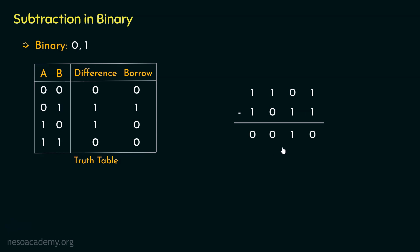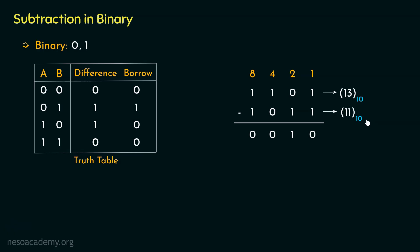The result of the subtraction is 0010. We can verify this using place values. For a 4-bit number, the place values are 1, 2, 4, and 8. The minuend 1101 in decimal is 8+4+1 = 13. The subtrahend 1011 in decimal is 8+2+1 = 11. The difference 0010 equals 2 in decimal, which is correct since 13 minus 11 equals 2.